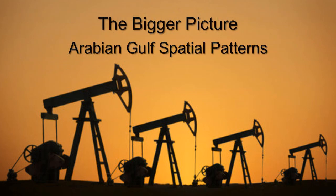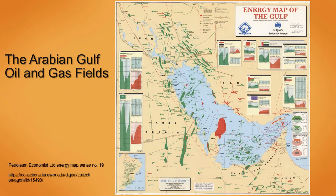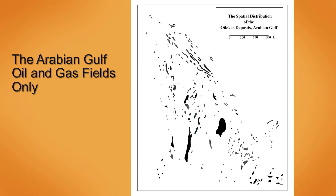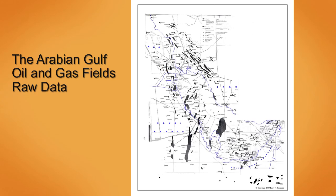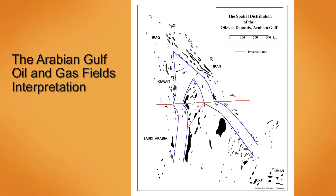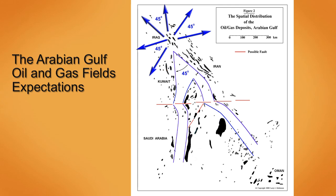We will commence with the bigger picture, which is the spatial patterns in the Arabian Gulf. This is our raw data set. Here we have isolated that data set with emphasis purely on the spatial distribution of oil and gas in the Arabian Gulf. The interpretation and the expectations knowing the radial distribution of heat — however, those expectations were not realized.